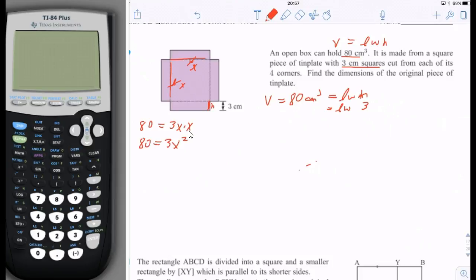We can just use algebra here, divide both sides by 3, and we'll get x squared equals 80 divided by 3, and then we can take the square root of that. So the answer would be, let's do that on the calculator, we'll take the square root of 80 divided by 3, and it's 5.16.